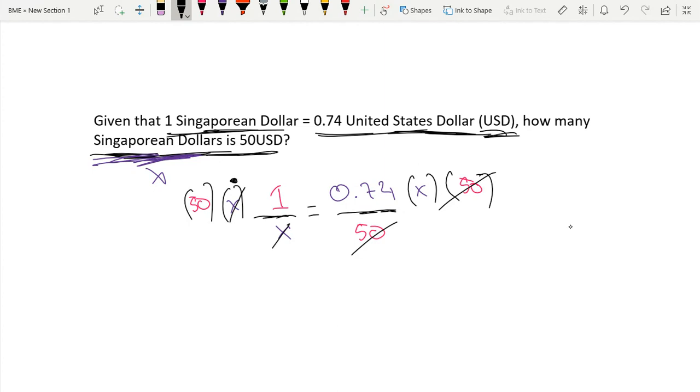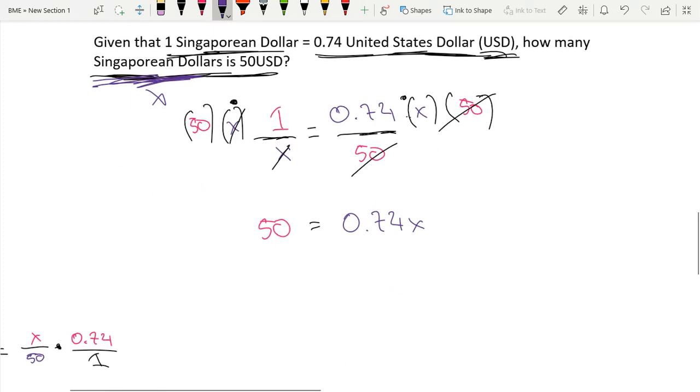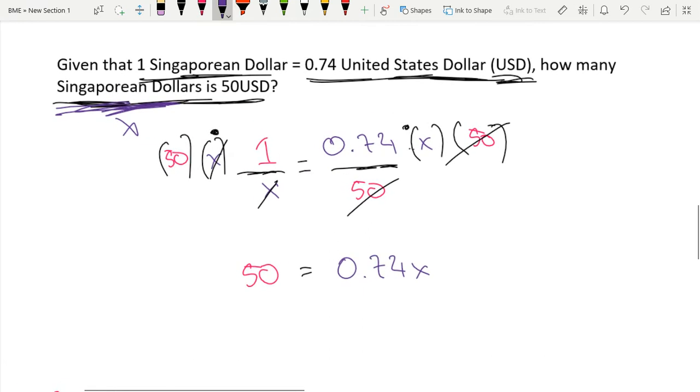So we have our two x's canceling out like this. Now we have 50 times 1 on this side, and on this side we have 0.74 times our variable x. So we get 50 equals 0.74x. From here we can just divide both sides of the equation by 0.74 to get x. X is equal to approximately 67.57, and that is our answer.